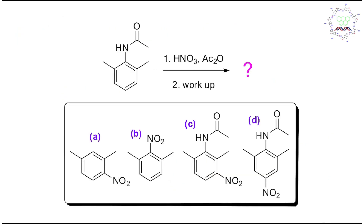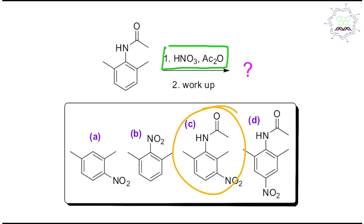So the answer to today's question is meta substitution, with everything else remaining the same — option C is the right answer. Now, if this question appears in your exam, how can you arrive at the right answer in under 30 seconds? You need to know the consequence of this reagent system: nitric acid and acetic anhydride produces the nitronium cation as the electrophile. The acetic anhydride acts as a dehydrating agent to generate this electrophile.